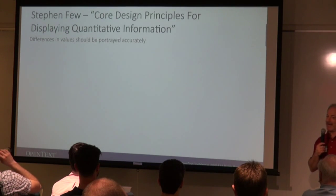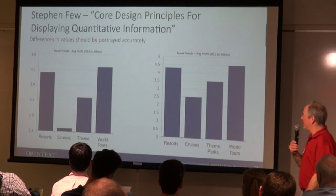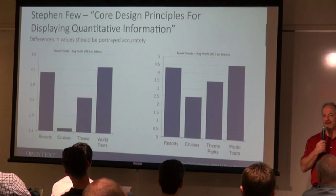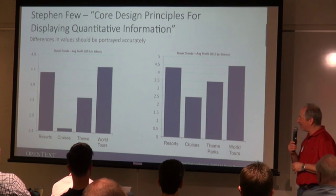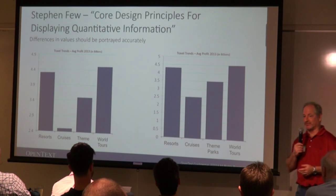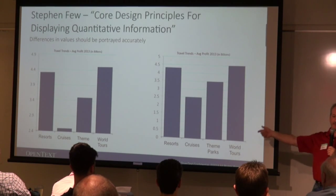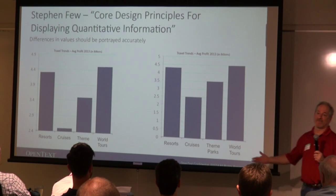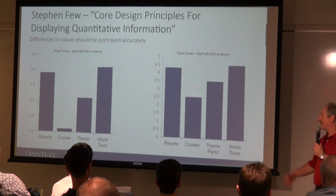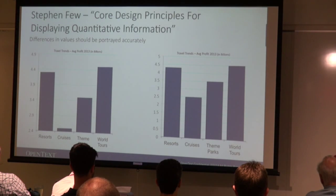Differences in values should be portrayed accurately. These two charts show exactly the same numbers. In the chart on the right, cruises appears to have a very small bar. So if I was in the cruise industry and wanted to ask for tax benefits, I'd show the right chart and say we're not making a lot of profit. What's the difference between the two charts? The scale — where we're starting from. Because I'm starting at 2.4, it looks like there's a big difference between cruises and the rest. In general, all bar charts that are quantitative shall always start at zero.